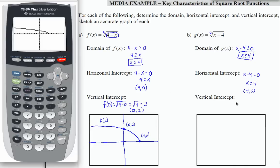Let's look at the vertical intercept. I'm going to evaluate g of 0. And that's going to be the square root of 0 minus 4, which is the square root of negative 4. That is not a real number, which means there is no vertical intercept for this function.